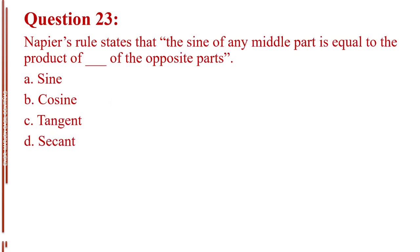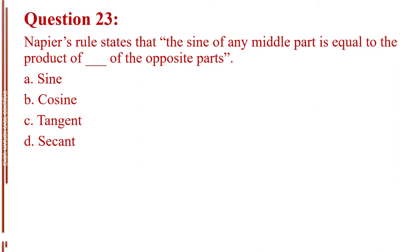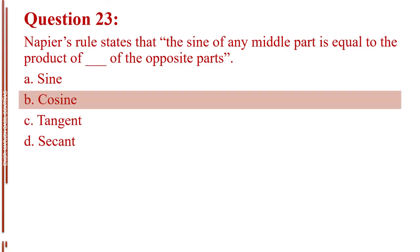Question number twenty-three. Napier's rule states that the sine of any middle part is equal to the product of blank of the opposite parts. Letter A, sine. Letter B, cosine. Letter C, tangent. Letter D, secant. The answer is Letter B, cosine.